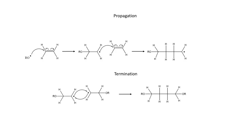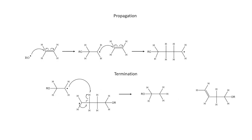The reaction ends when the termination step is reached. Two radical chains can react with each other, and the two unpaired electrons can form a carbon-carbon bond linking both polymers together. Polymer chains can also terminate through disproportionation, where a carbon-hydrogen bond is cleaved through the action of a second chain.